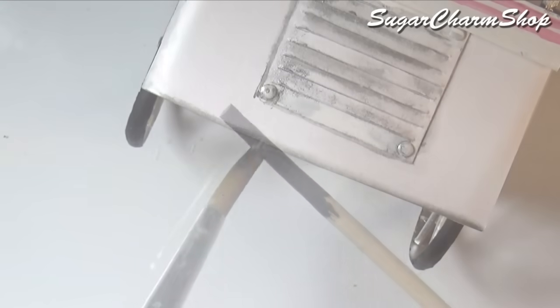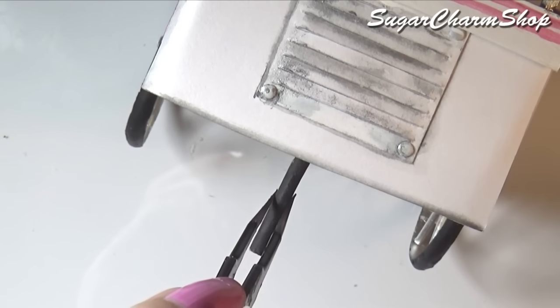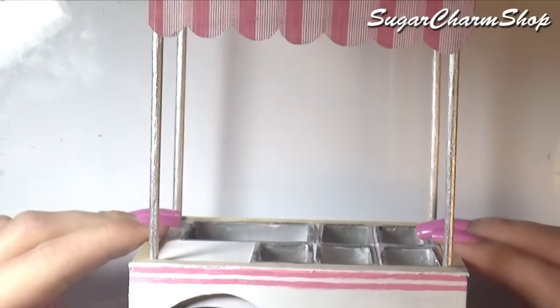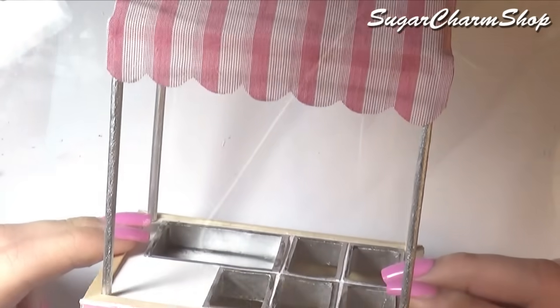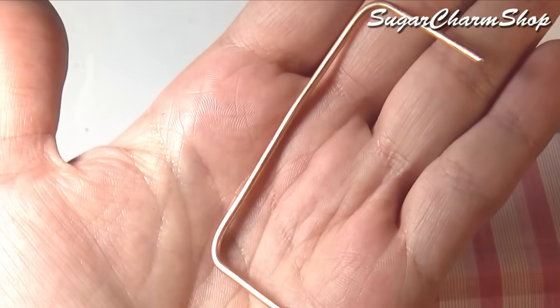On the opposite end, you want to add a stand or foot. And to make the handle, I just took a piece of copper wire, bend it, poke two holes in the box and glued it in place.